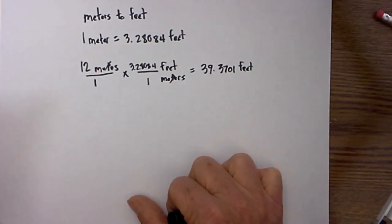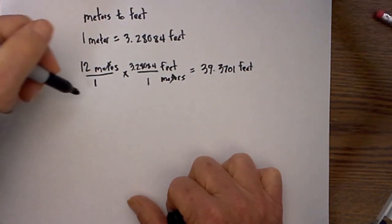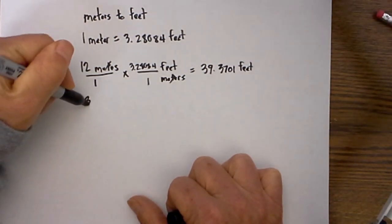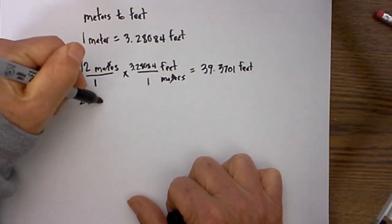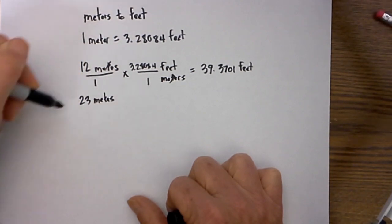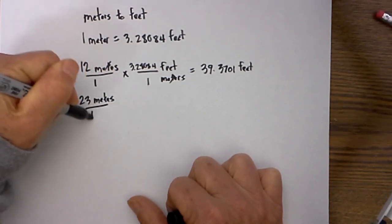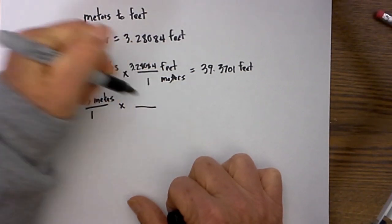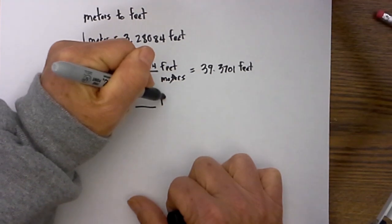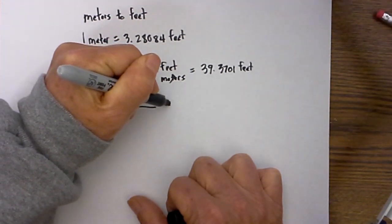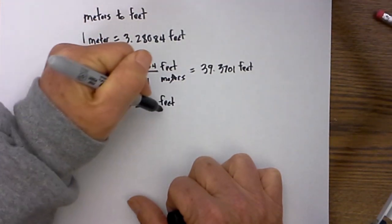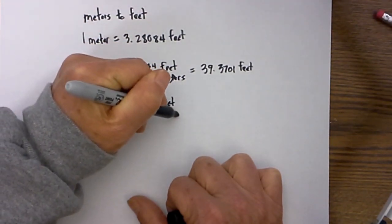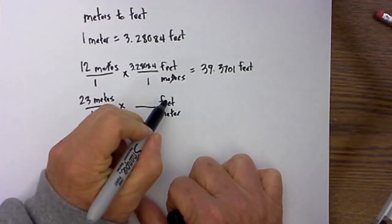Let's do another one just for good measure. Say I would like to know 23 meters is equal to how many feet. Place 23 over 1, place the unit of measure I would like to go to on top, and put what is given on the bottom.